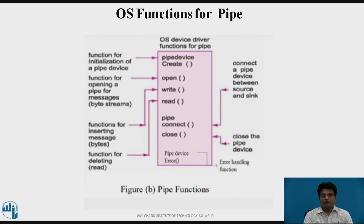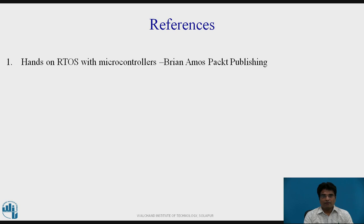OS Functions for Pipe: As shown in the figure, the OS device driver functions for pipes are: pipe_create — for initialization of the pipe device; pipe_open — for opening the pipe for messages using byte streams; pipe_write — for inserting the message in bytes; pipe_read — for deleting, that is reading; pipe_connect — to connect the pipe device between source and sink; pipe_close — to close the pipe device; and pipe_error — for error handling.